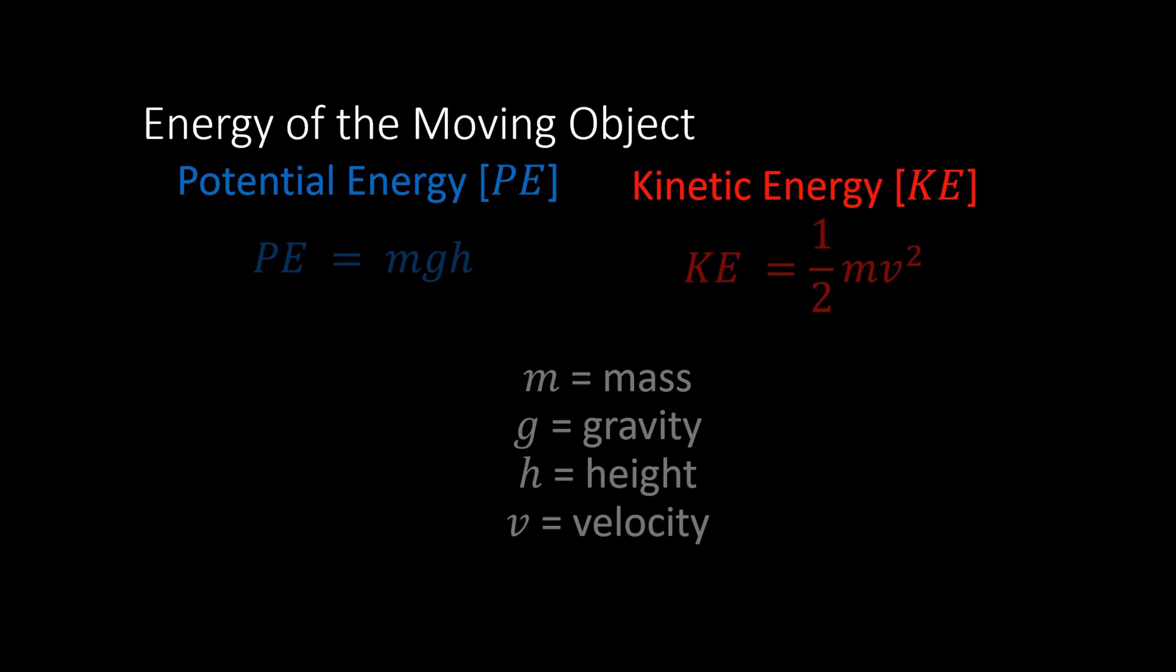All right, so now that we know what forces act upon the block at the top of the ramp, we also have to consider how energy affects the block as it rolls down the track. There are two main types of energy that we're going to focus on: potential energy and kinetic energy. The equation for potential energy is PE = mgh (mass times gravity times height), and the equation for kinetic energy is KE = ½mv² (one half times the mass times the velocity squared).